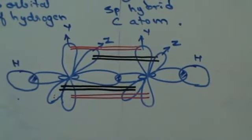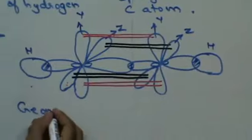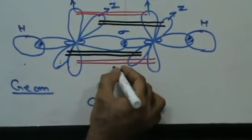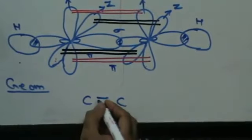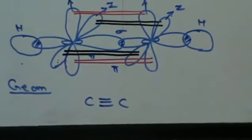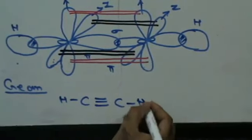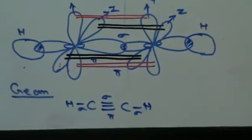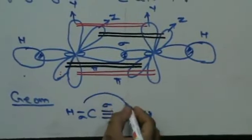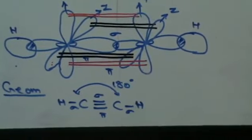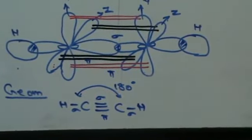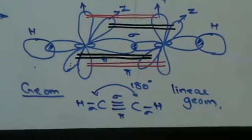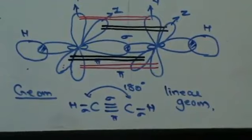Because of this lateral force of attraction, you will have overlap where there is one sigma bond formed due to actual overlapping, and there are two pi bonds formed by lateral overlapping. These two pi bonds connect the carbon atoms, which then connect to a hydrogen on each side. So there is one sigma bond between the carbons and two pi bonds, plus sigma bonds to hydrogen. The bond angle remains 180 degrees. This is called linear geometry. This is how your acetylene molecule would look.